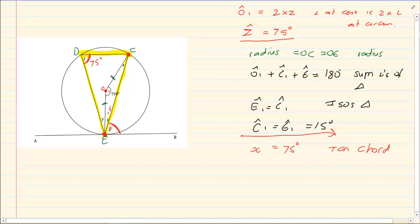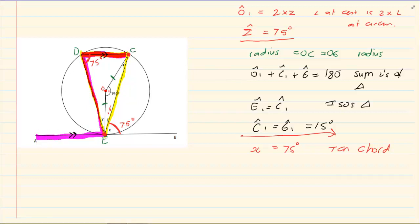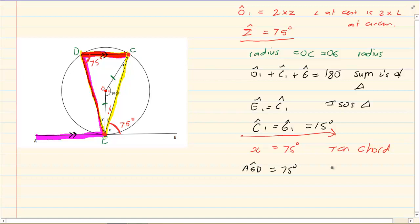Now X equals 75 degrees. It is further given that DC is parallel to AB. Since DC is parallel to AB, we have that AED is equal to 75 degrees.